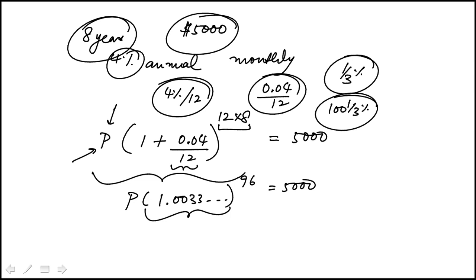Let me actually do it here, so 1.04 divided by 12, plus 1, so it's 1.00333 to the power of 96. That turns out to be 1.3764.